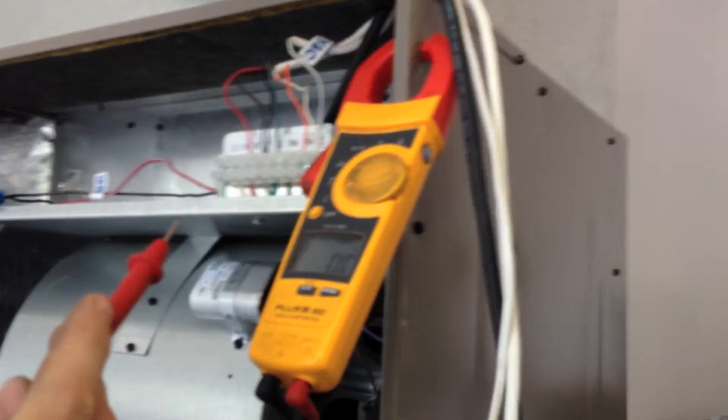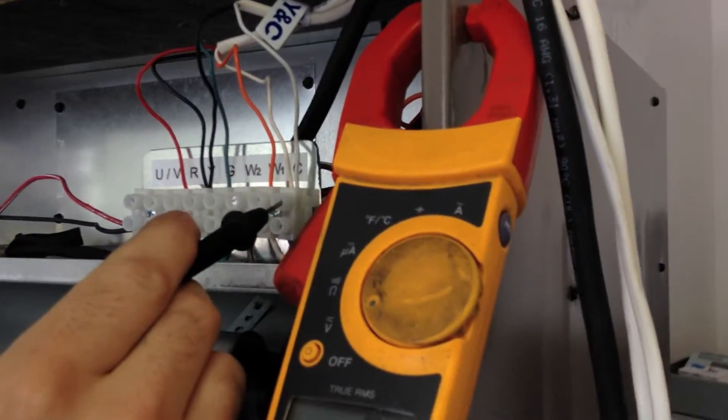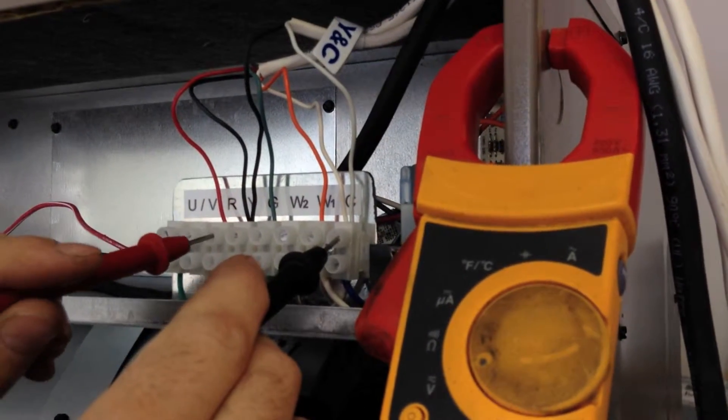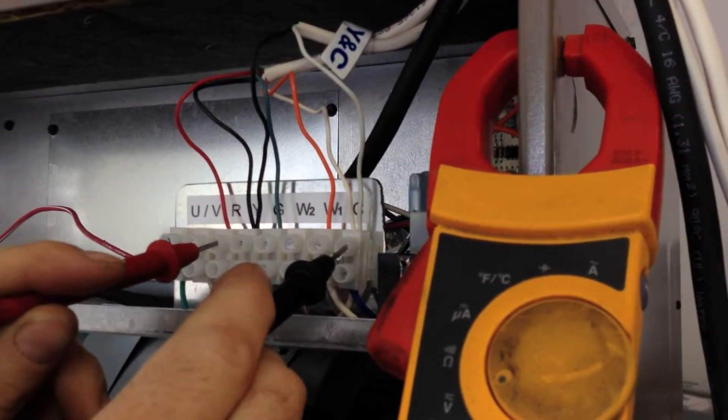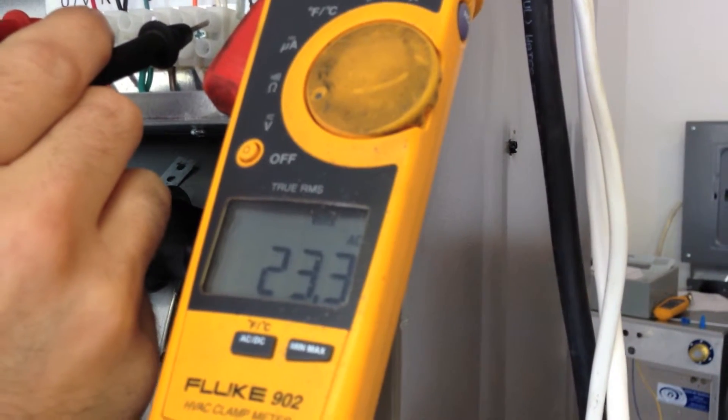Next, we're going to take our probes and we're going to put our black onto our C terminal and our red onto our R terminal. And if you look at our voltage screen, we have 23.3 volts, so we have voltage.